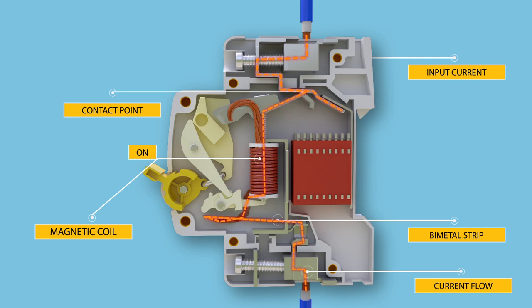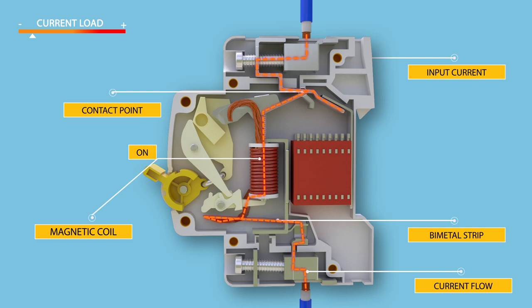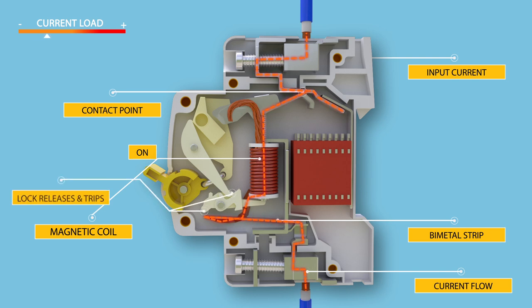Under overload conditions, the current through the bi-metallic strip causes the temperature to rise. The heat generated within the bi-metallic strip is enough to cause deflection due to the thermal expansion of the metals.